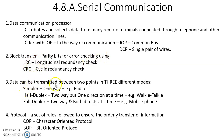Data can be transmitted between two points in three different modes. One is simplex — one-way communication like radio — where only the transmitter sends the data and the receiver can receive, but the receiver can never send data to the transmitter. The second way is half-duplex — two-way communication but one direction at a time, like a walkie-talkie. If the transmitter is sending data, the receiver has to receive; if the receiver is transmitting data, the transmitter has to listen.